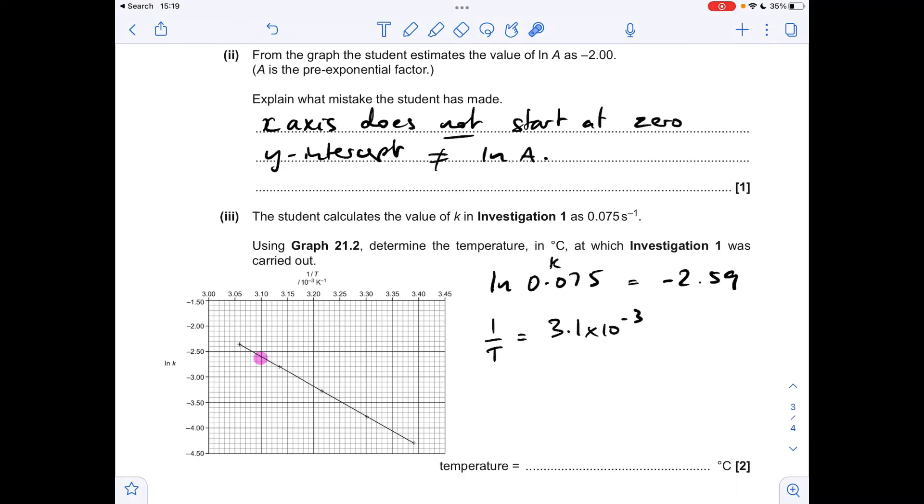So that means that 1 over T is equal to 3.1 times 10 to the minus 3. So we need to do 1 over that to turn it into T, which gives a value for the temperature at 322.6, but we're in Kelvin. Question asked for the final answer in degrees C. So we need to subtract 273 from that, which gives a temperature of 49.6 degrees C.